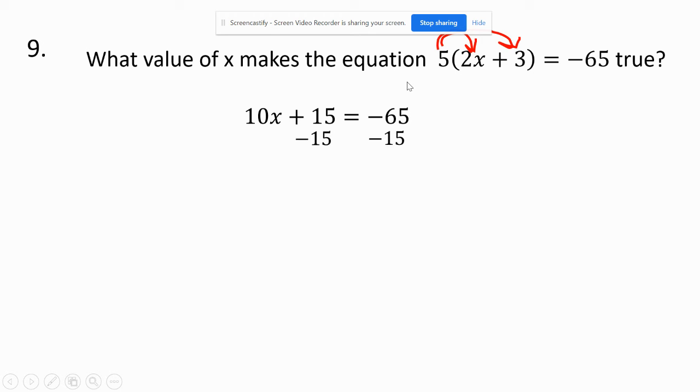So, now I have a multiply and add. So, I'm going to subtract 15 from each side. And a -65 and -15 are both negative. So, I'm going to add them. You get -80. The 15s cancel out. I'm multiplying by 10. So, I'm going to divide by 10. -80 divided by 10 is a -8.